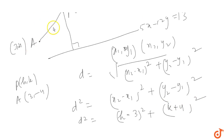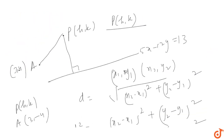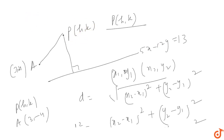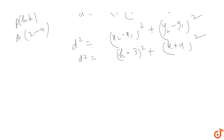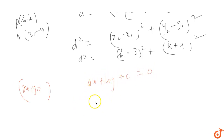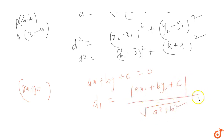This d squared is equal to the distance of point P from the line. We need the formula for finding the distance of a point from a line. If a point is (x₀, y₀) and we have the line ax + by + c = 0, then the distance d1 equals ax₀ + by₀ + c divided by the square root of a² + b².